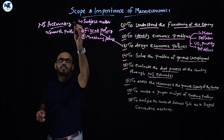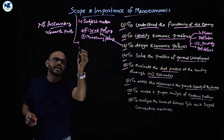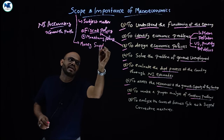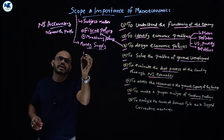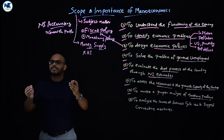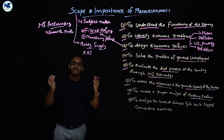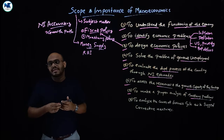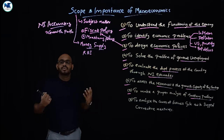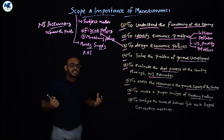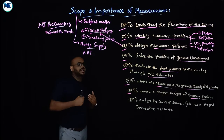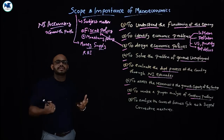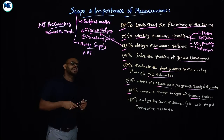The seventh point is to make a proper analysis of monetary problems. This is a major area in the scope of macroeconomics, covering money supply (M1, M2, M3, M4), high-powered money, the role of the central bank (RBI), demand for money, and the control of inflation and deflation through monetary policy measures.